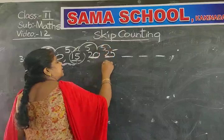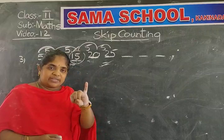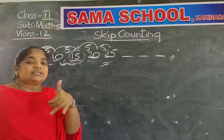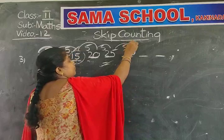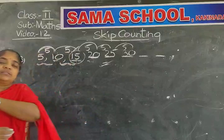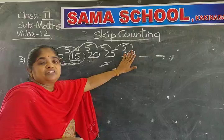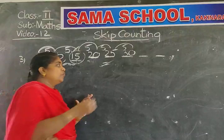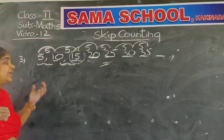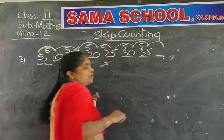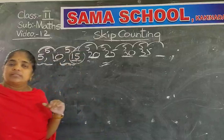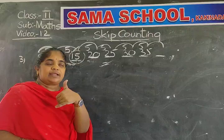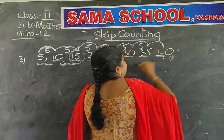Again start counting after 25 — what is the fifth number after 25? 26, 27, 28, 29, and 30. 30 is the fifth number. Two more numbers: 30 after — what is the fifth number? 31, 32, 33, 34, and 35. 35 is the fifth number — we are skipping four numbers in the middle. Last line — what is the fifth number after 35? 36, 37, 38, 39, and 40. 40 is the fifth number after 35.